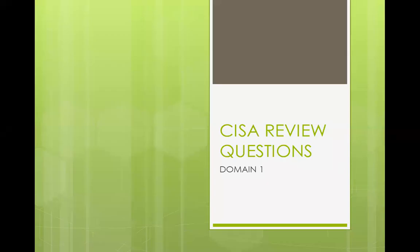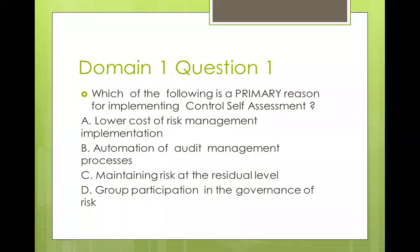I want to look at some review questions in domain one. Question one: which of the following is a primary reason for implementing control self-assessment? Options: lower cost of risk management, automation of body management processes, maintaining risk at the residual level, group participation, or uniform governance of risk. Control self-assessment involves line managers taking responsibility for audit and control, basically to keep risk within the acceptable level. So the answer is C.